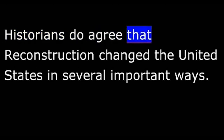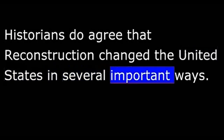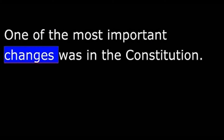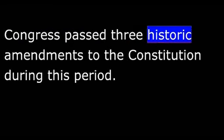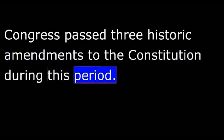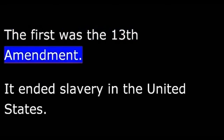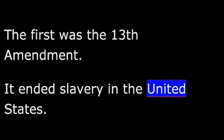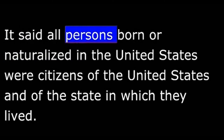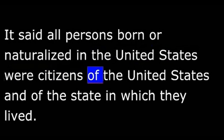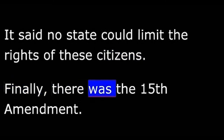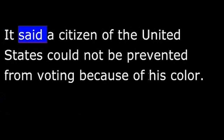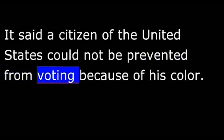Historians do agree that Reconstruction changed the United States in several important ways. One of the most important changes was in the Constitution. Congress passed three historic amendments during this period. The first was the Thirteenth Amendment, which ended slavery in the United States. The next was the Fourteenth Amendment. It said all persons born or naturalized in the United States were citizens, and that no state could limit the rights of these citizens. Finally, there was the Fifteenth Amendment, which said a citizen of the United States could not be prevented from voting because of his color.